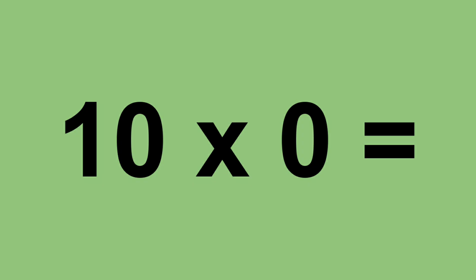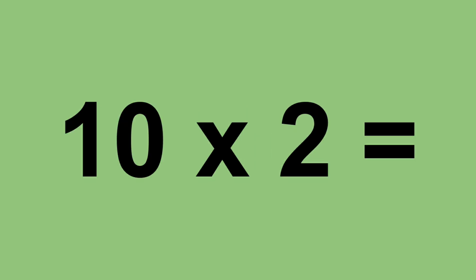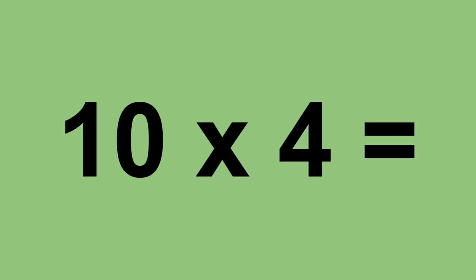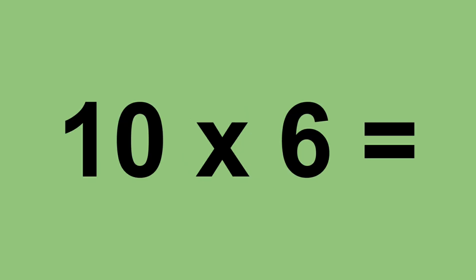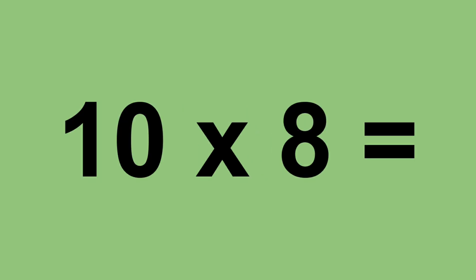Ten times zero equals zero. Ten times one equals ten. Ten times two equals twenty. Ten times three equals thirty. Ten times four equals forty. Ten times five equals fifty. Ten times six equals sixty. Ten times seven equals seventy. Ten times eight equals eighty. Ten times nine equals ninety.